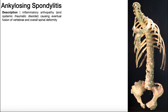In this video, we're going to be talking all about ankylosing spondylitis. This is an inflammatory arthropathy and also a systemic rheumatic disorder that causes the vertebrae to fuse over time, and this results in a secondary spinal deformity that we'll explore as we go throughout this video.